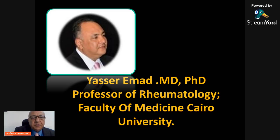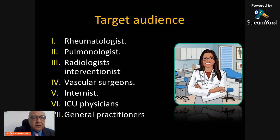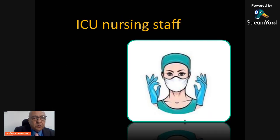I am a professor of rheumatology. Today I'm going to give you a briefing about the difference between pulmonary artery aneurysm — whether true or false — in Hughes-Stovin syndrome, and also in Behçet disease, because what applies in Hughes-Stovin syndrome directly applies to Behçet disease. My target audience today includes rheumatologists, pulmonologists, radiologists — especially interventional radiologists — vascular surgeons, internists, ICU physicians, and general practitioners. The ICU nursing staff is also important, as they stay with our patients 24/7 and should report any worsening of existing symptoms.